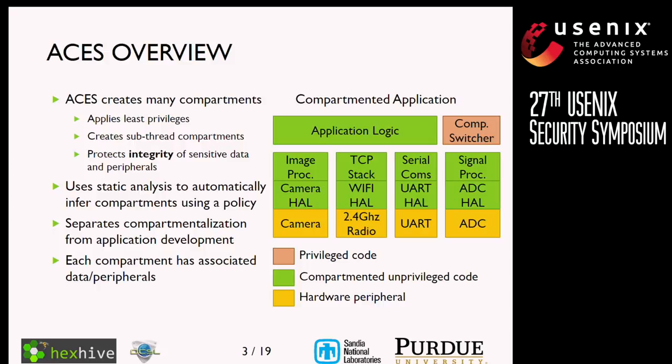ACES's goal is to create many compartments within these applications. This applies the principle of least privileges. We create sub-thread level compartments and protect the integrity of sensitive data and peripherals — we're integrity only, not confidentiality. To do this, we use static analysis of the program to infer compartments and then allow a policy to determine how those compartments should be formed. This separates compartmentalization from application development so the developer can experiment with different policies. After compartments are applied, application logic is separated from each library, and each library has data and hardware peripherals associated with it. These systems use memory-mapped peripherals, so we can isolate which peripherals code can access.